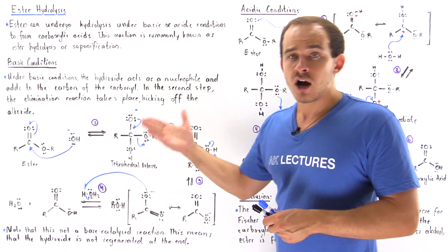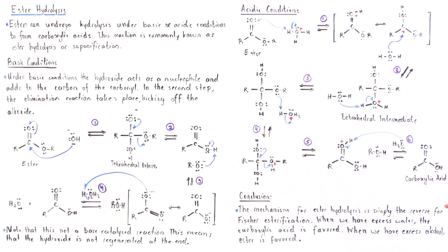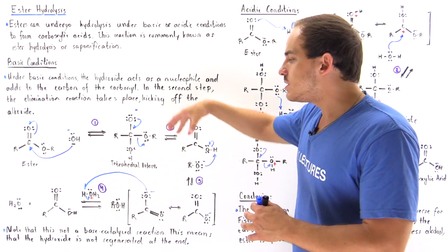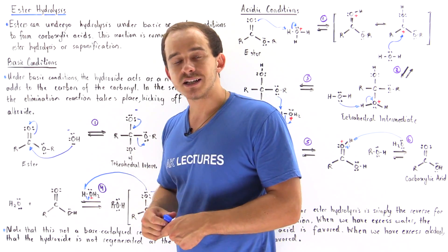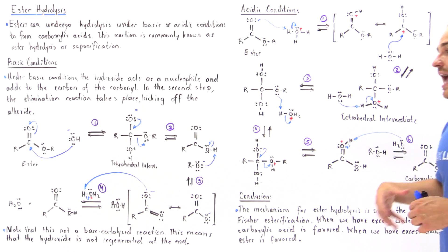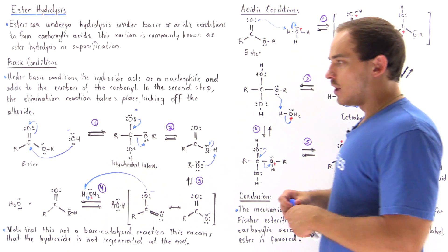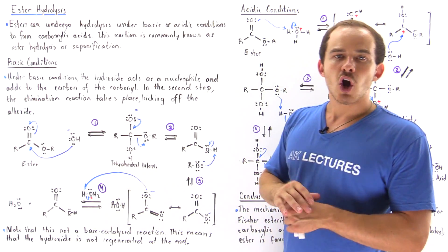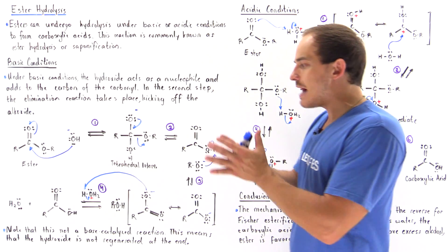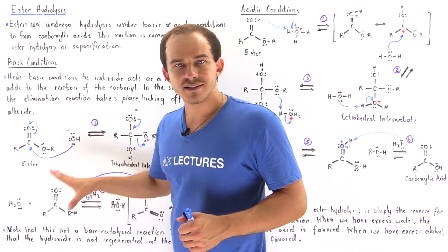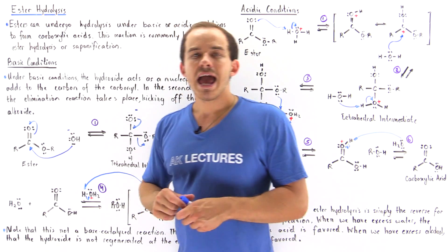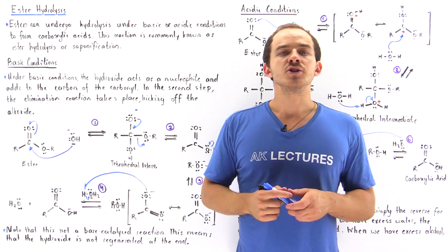We can form the carboxylic acid either under basic or under acidic conditions. When we have excess water in our mixture, by Le Chatelier's principle, we will tend to produce a lot of our carboxylic acid. However, if we have excess alcohol, by Le Chatelier's principle, we will go in reverse and form our ester from the carboxylic acid. So when we have excess water, we have a lot of carboxylic acid present at equilibrium; when we have excess alcohol, we have a lot of ester present at equilibrium.